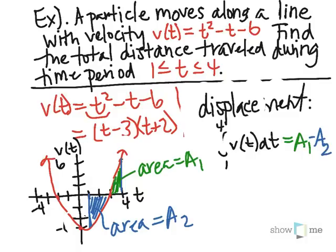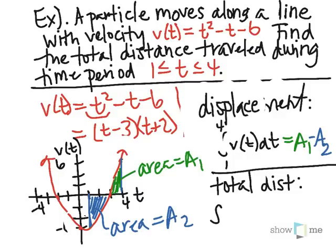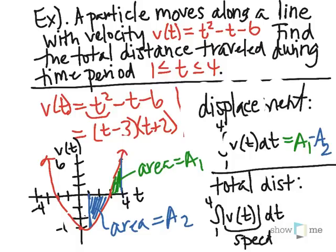If instead I want total distance — counting both the distance moving left and the distance moving right — that's given by the integral of the absolute value of velocity. In other words, the definite integral of speed, which is |v(t)|. In that case I get A1 plus A2. So the question becomes: how do I take the definite integral of the absolute value of a function?